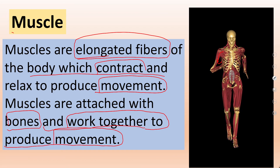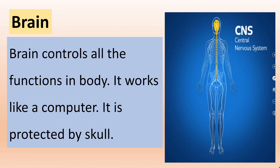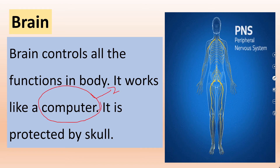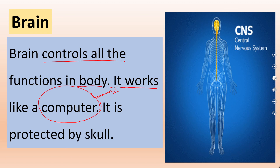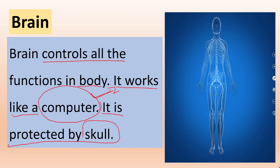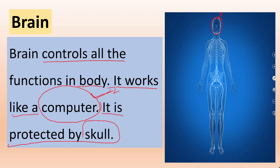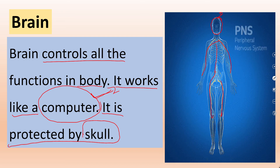Next is brain. Brain acts just like a computer in our body — it can process and store information long-term. It is the control machine of our body where we control all our body functions. The brain is protected by the skull, which is a hard body structure that protects this soft body part. Our whole body functions are controlled by our brain.